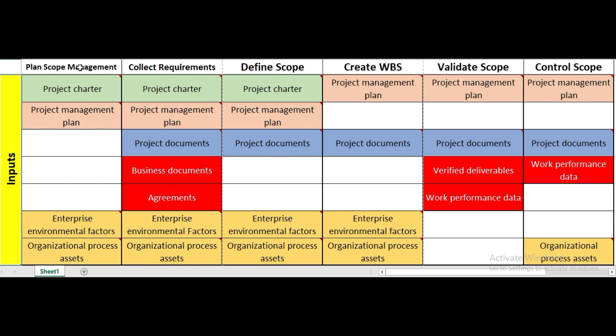We've coded different boxes with similar colors based on their similarity. For example, project charter is coded with a light green color, and project management plan with a light pink color. The red color indicates critical inputs, tools and techniques, or outputs that you need to focus on particularly, as most PMP exam questions will come from these.